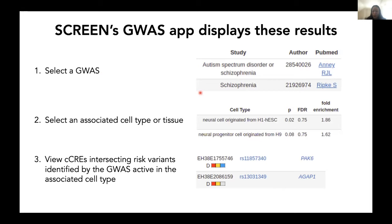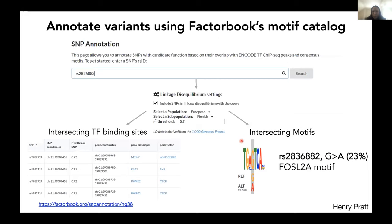You can select a GWAS study and cell or tissue type in SCREEN and see which CCREs intersect the variants. You can also look at the variant in FactorBook to see which TF binding site regions intersect, which motif is involved, and whether the variant — as reference or alternative allele — falls inside a motif and what its frequency is. All these data are in FactorBook.